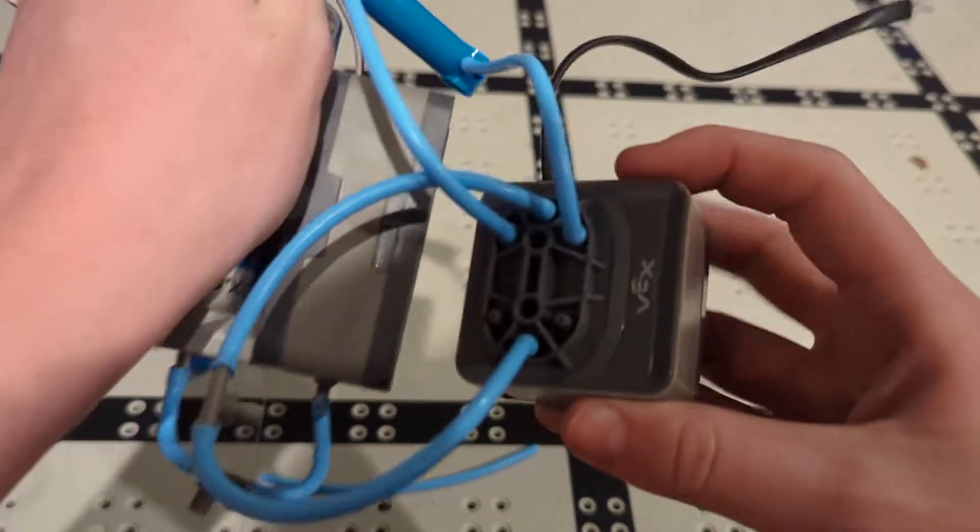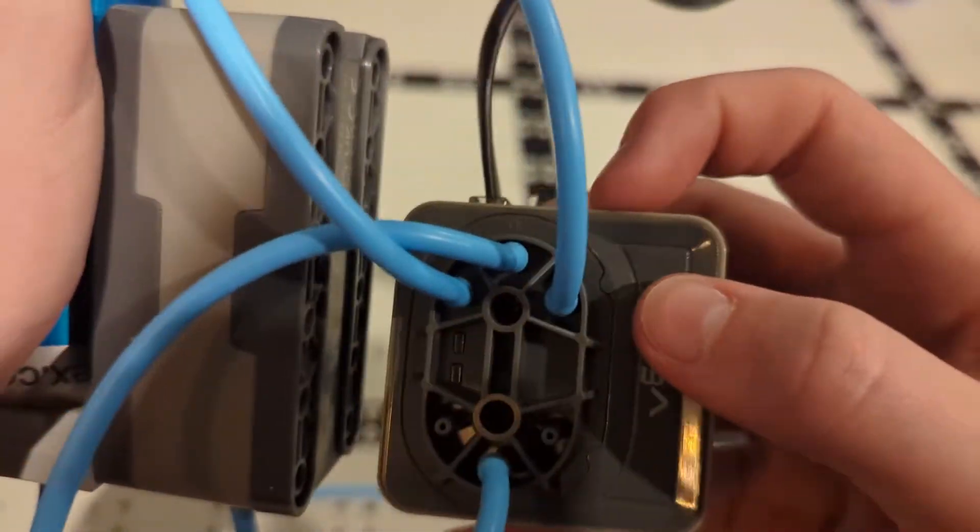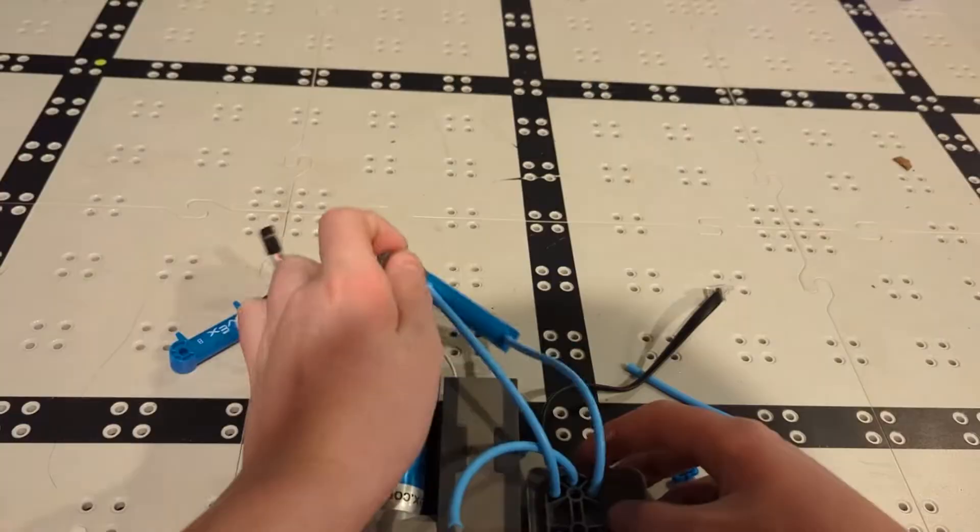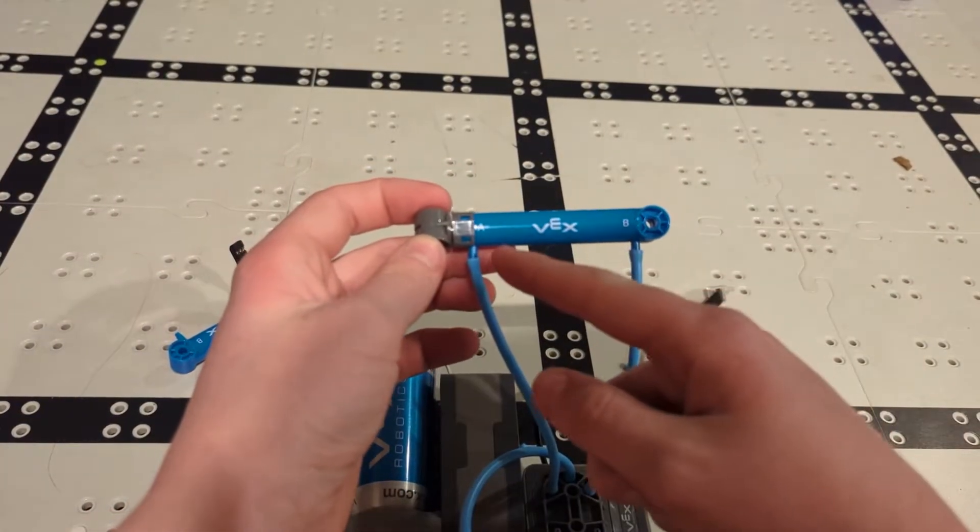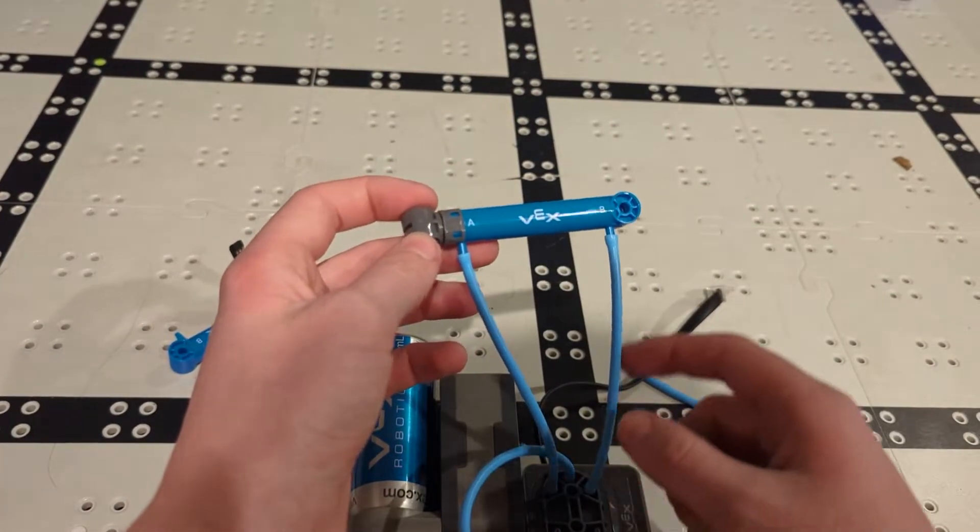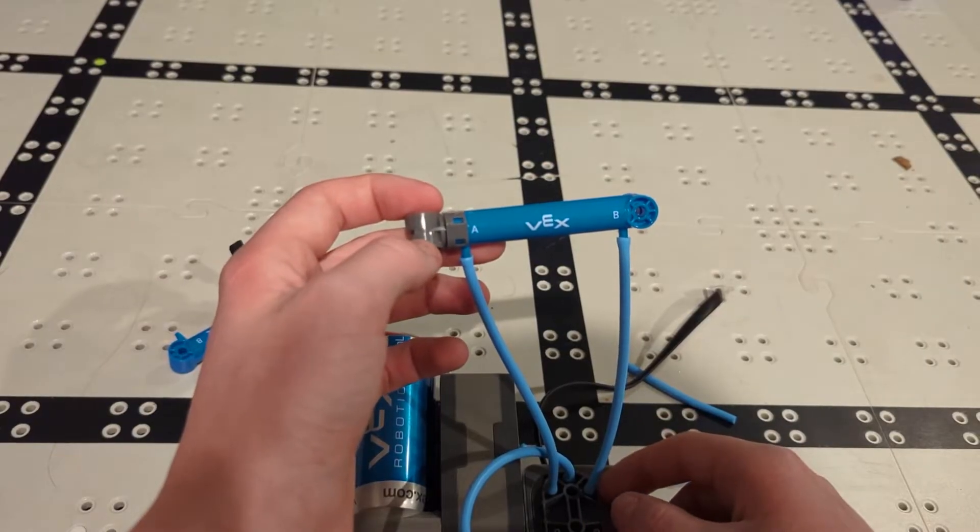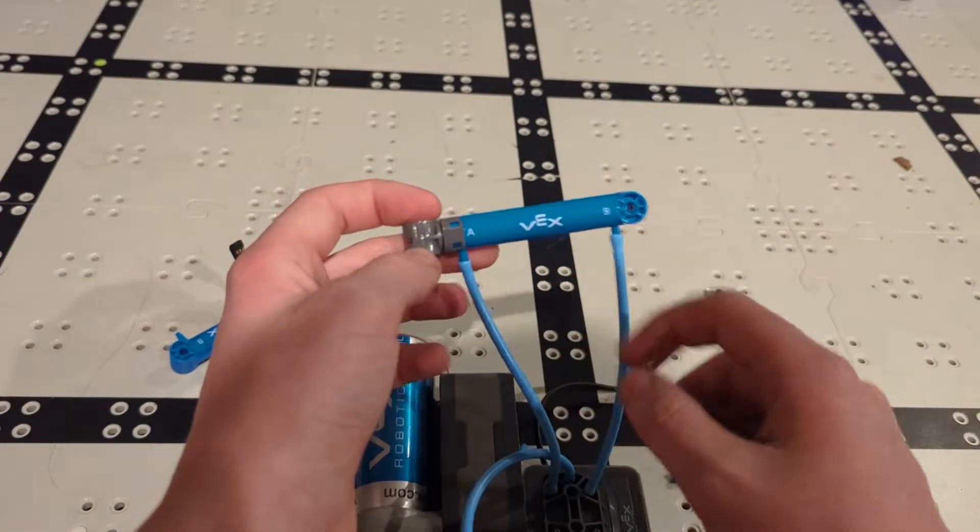So on the pump, like there was a P, there's a B on this side and there's an A on this side. And then on the cylinder, there's an A on this side and a B on this side. So you got to make sure the lines go to the right spot. So the B side will go with the B side, the A side will go with the A side.